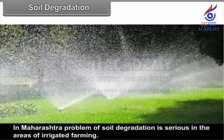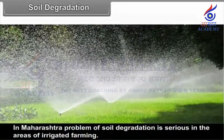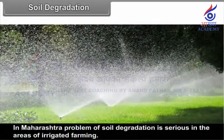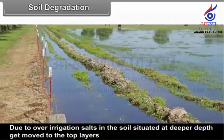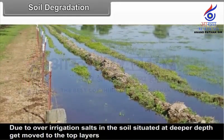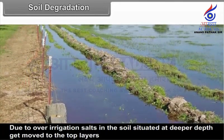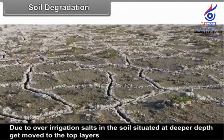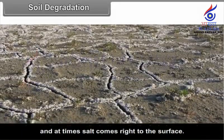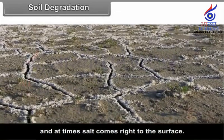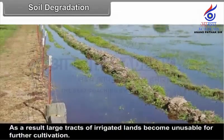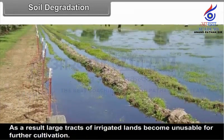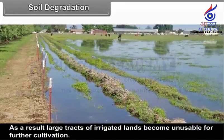In Maharashtra, the problem of soil degradation is serious in the areas of irrigated farming. Due to over-irrigation, salts in the soil situated at deeper depths get moved to the top layers and at times salt comes right to the surface. As a result, large tracts of irrigated lands become unusable for further cultivation.